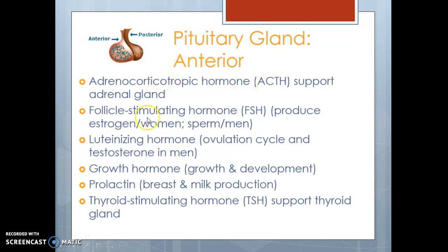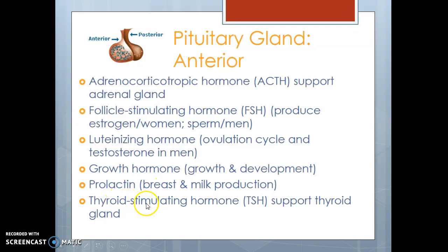The anterior pituitary gland secretes these hormones: adrenocorticotropic hormone, which supports the adrenal gland; follicle stimulating hormone, important in the production of estrogen in women and sperm in men; luteinizing hormone, important in the ovulation cycle and testosterone production in men; growth hormone, which allows you to grow from a tiny infant all the way up to adulthood; prolactin, which produces breast milk in females who have just given birth; and thyroid stimulating hormone (TSH), which helps support the thyroid gland.